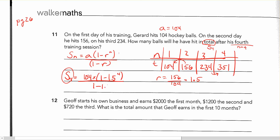And here we have 1 minus 1.5 in brackets. So 104 times 1 minus 1.5 to the power of 4 divided by 1 minus 1.5. And here sum to the first four terms. He's going to hit 845 hockey balls after his first four training sessions.